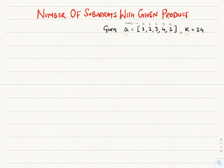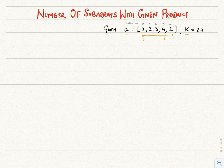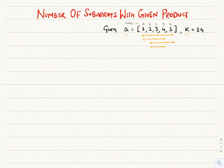Those 4 subarrays will be: the subarray from index 0 to index 4, the subarray from index 0 to index 3, the subarray from index 1 to index 4, and the subarray from index 1 to index 3. Let's see how to solve this problem.